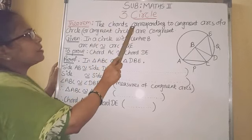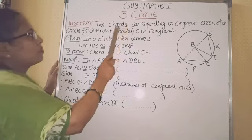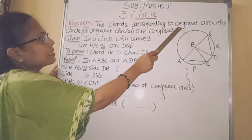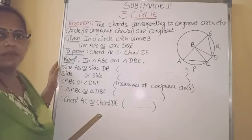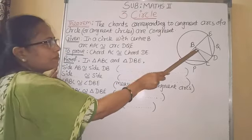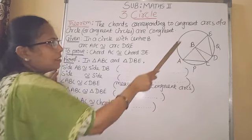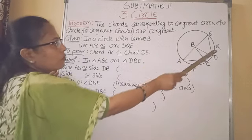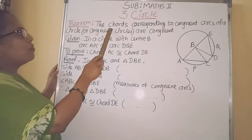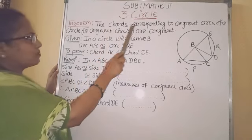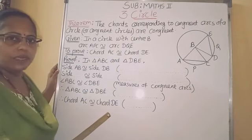From this statement, we first have to identify what is given. The given part is: in the circle, two congruent arcs are given. So, we will draw one circle and draw two congruent arcs in the circle.